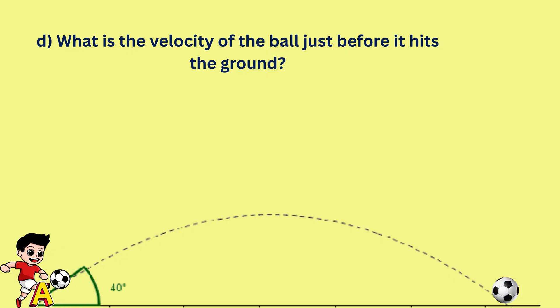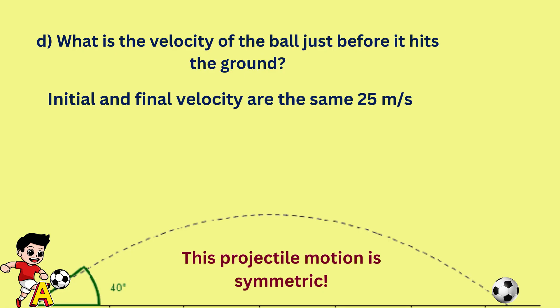Finally, the velocity just before the ball hits the ground is the same as the initial velocity, 25 meters per second. The angle of impact with the horizontal is also the same 40 degrees as the launch angle, but in the opposite direction.